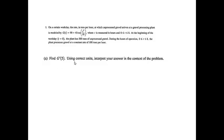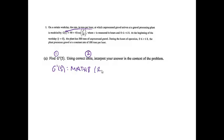Part A: Find g prime of 5. Using correct units, interpret your answer in the context of the problem. So there's two things: finding the value and interpreting the answer. G of t is modeled in tons per hour. If we want to find g prime of 5, we're going to use Math 8 on our calculator because we should never have to take the derivative by hand on a calculator problem. We're simply going to go to Math 8, make sure we are in radians, and when you type in the answer, you should get g prime of 5 is equal to negative 24.588.